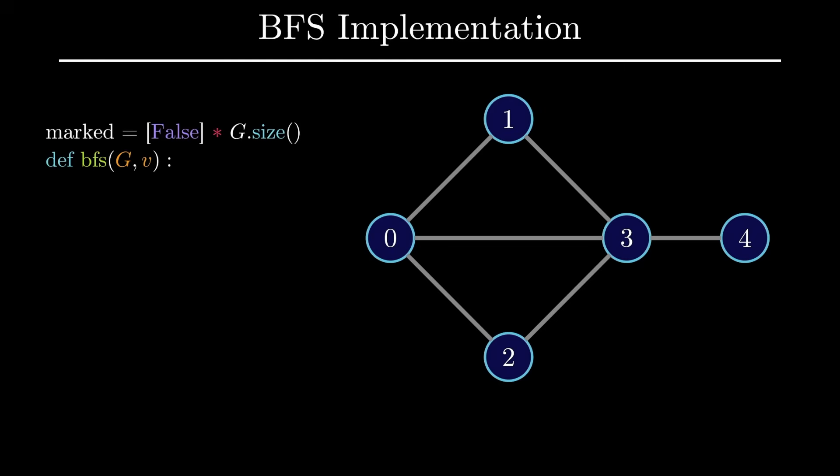The key idea that is the core of BFS is that we will use a queue to keep track of vertices that should be visited. While this queue is not empty, we will then remove a vertex from the front of the queue.